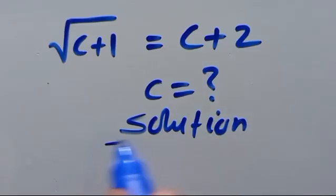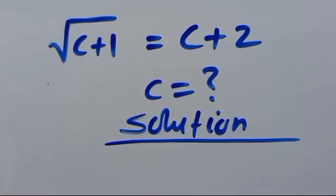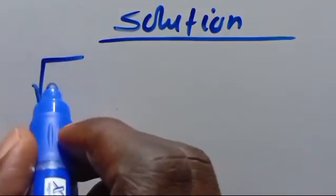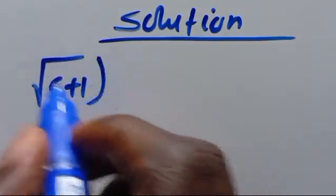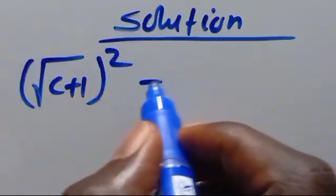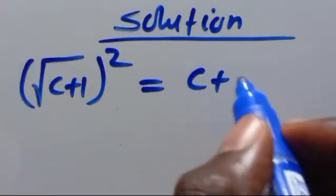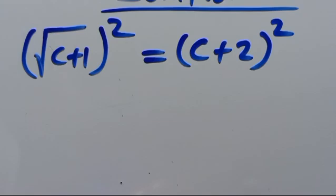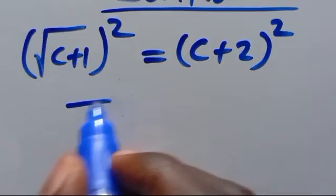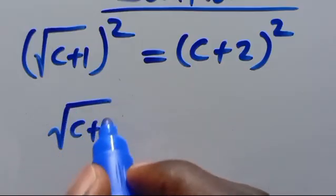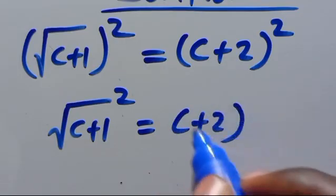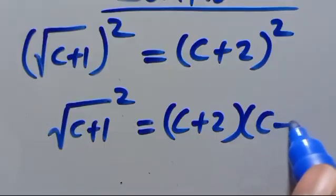From here, let's square both sides. When we square both sides, we have (√(c+1))² equals (c+2)². Recalling that squaring the square root removes it, the left side becomes c+1, and we can expand the right side as (c+2)(c+2).